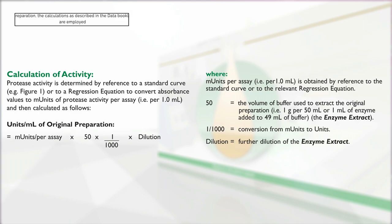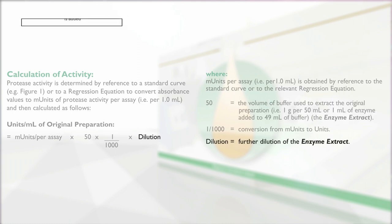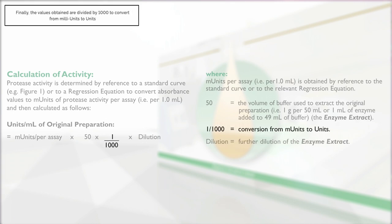To calculate activity as units per milliliter or units per gram of original preparation, the calculations as described in the data booklet are employed. The determined activity in milliunits per assay is multiplied by the extraction volume, 50, which is 1 gram or 1 milliliter of sample extracted in 50 milliliters of buffer. If the sample extract was diluted further, then this dilution factor is added. Finally, the values obtained are divided by 1000 to convert from milliunits to units.